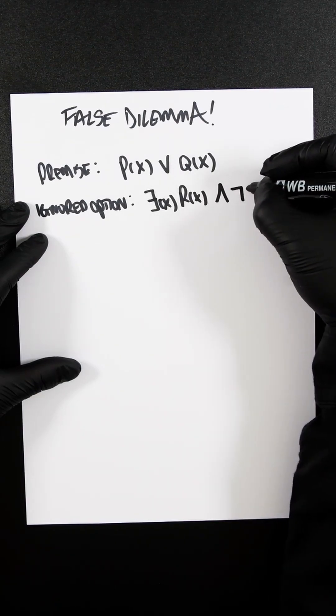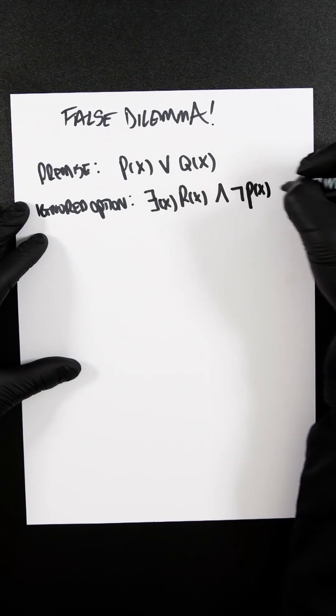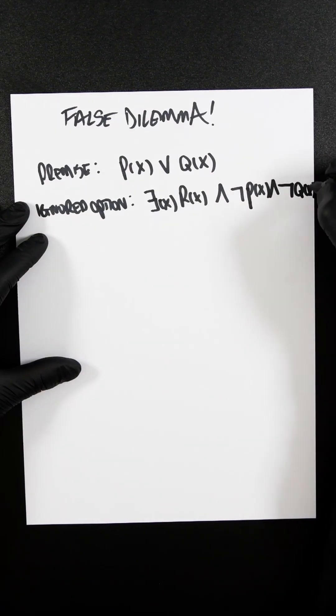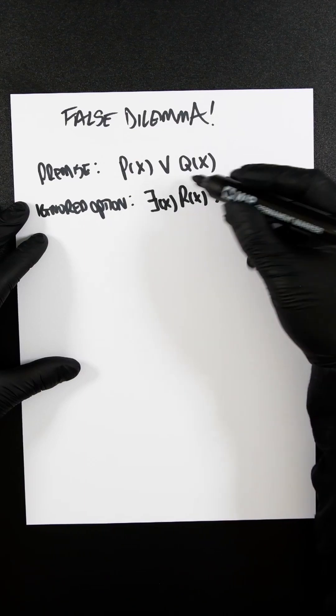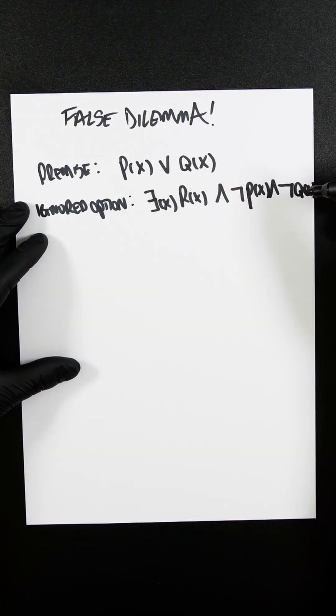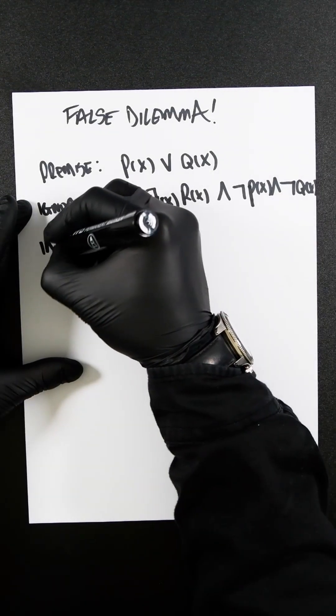...and not P and not Q of x. So there is this other option, there exists this other option and not these two options only. So then the invalid...